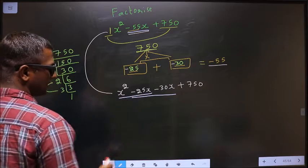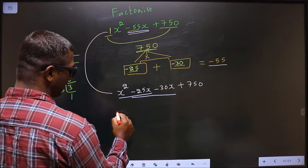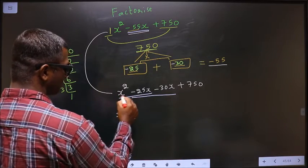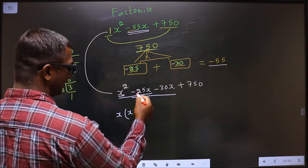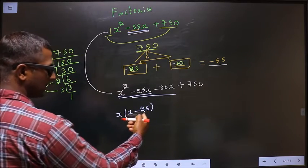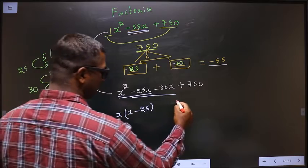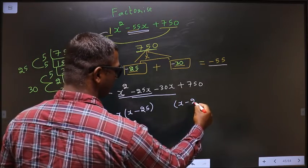From these two terms, what can be taken out common is x. So here I get x and here I get 25. Whatever you got in this bracket, here also you should get the same thing.